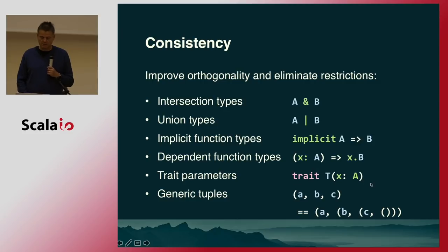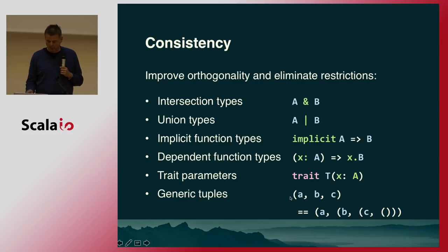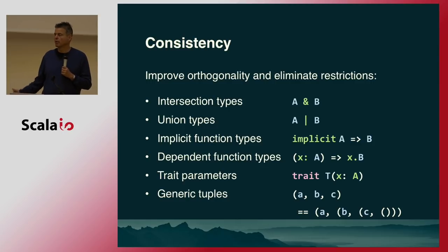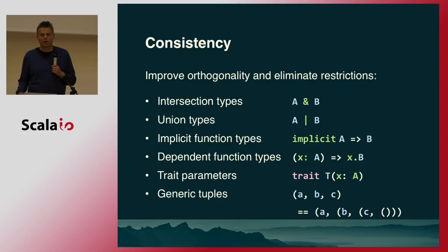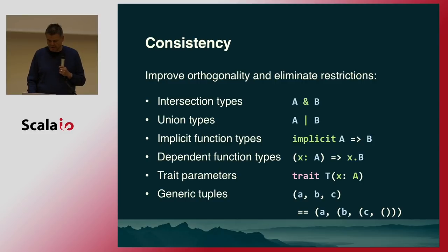For consistency, there are trait parameters. Classes can have parameters — why should traits not have parameters? That's something that could still land in Scala 2.14 as it's already very far along. And the next one is generic tuples. The idea is to first lift the limit of 22 for everything — functions and tuples of arbitrary sizes. You want generic operations over those tuples; for instance, taking the concatenation of two tuples and getting a tuple with a type that really gives you the element types. That means going into data-type generic programming.